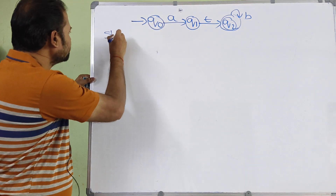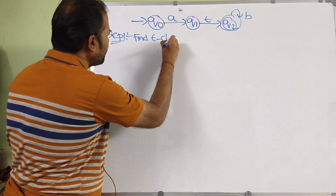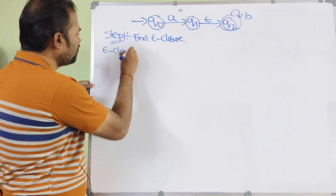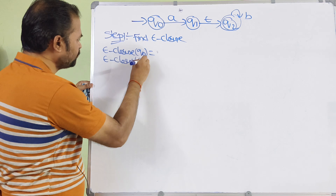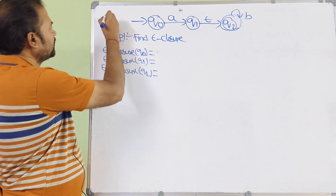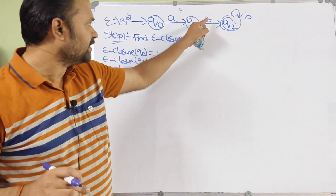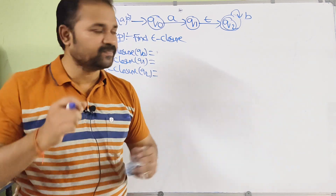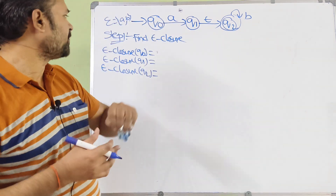Step one is to find epsilon closures. We need to find epsilon closure of each and every state. Here we have three states: Q0, Q1, and Q2. The input alphabet contains two symbols: A and B. Epsilon is not part of the input alphabet — by using epsilon we can move from one state to another state without applying any input symbol.